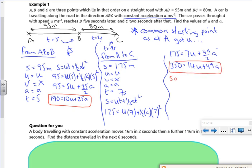So if I solve, 10u plus 25a is 190, and then 14u plus 49a is 350. That's going to give me u is 4 meters per second and a is 6 meters per second squared.